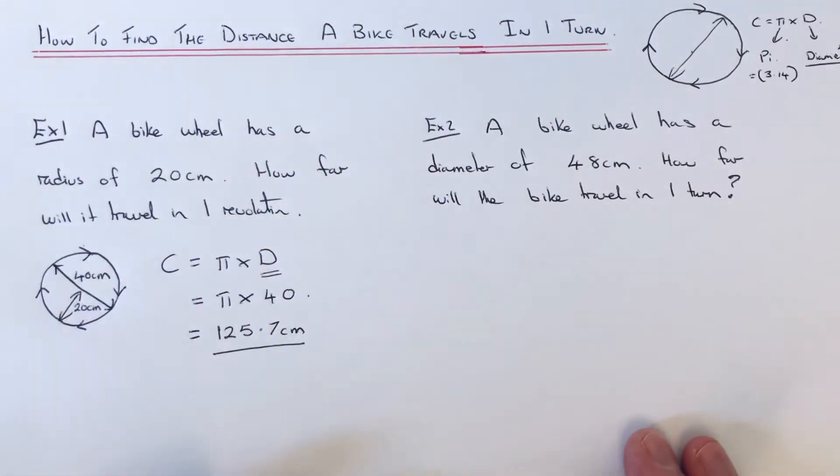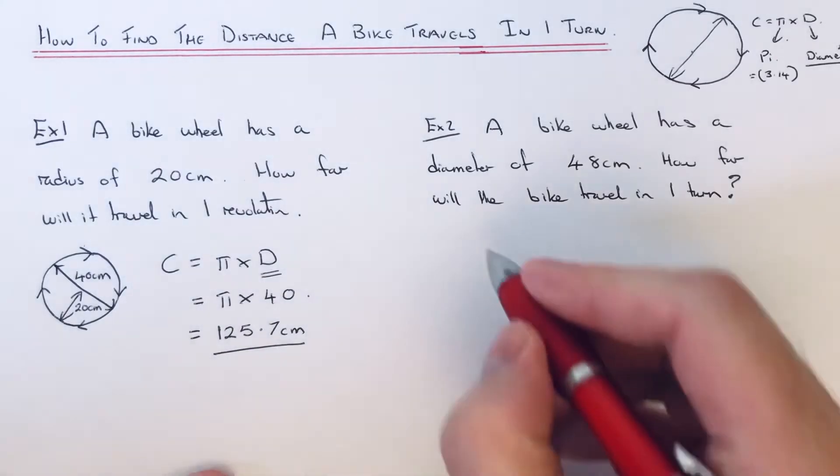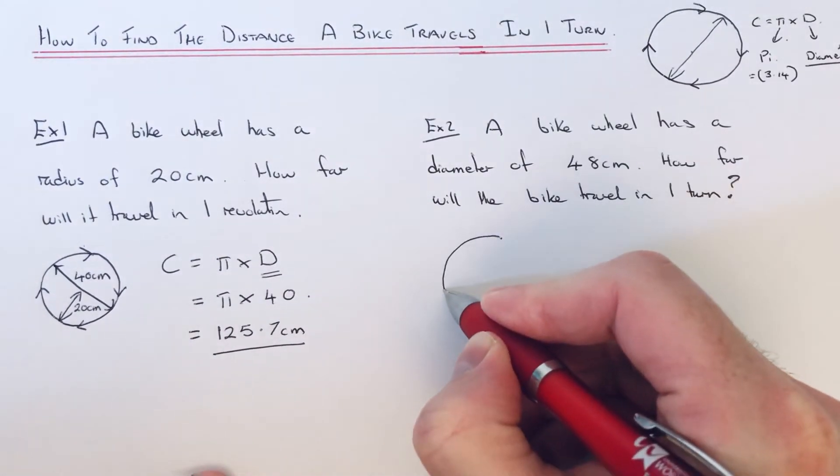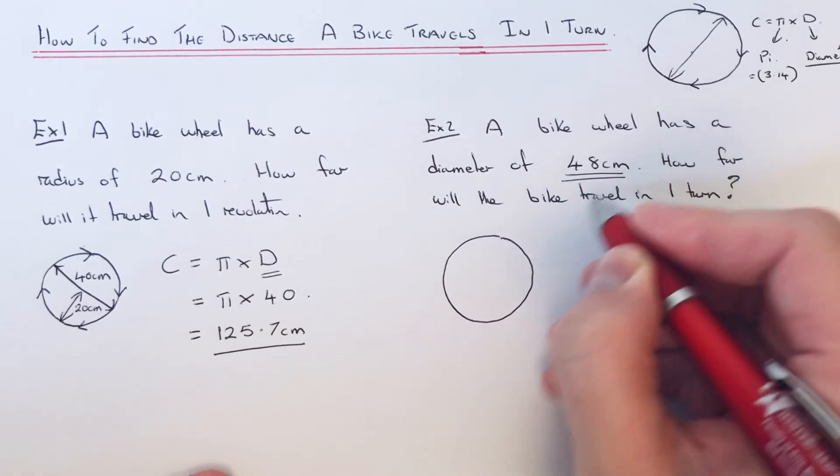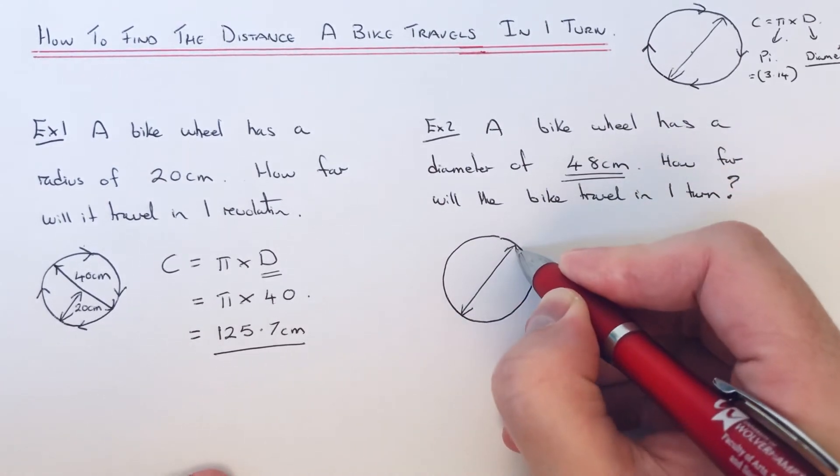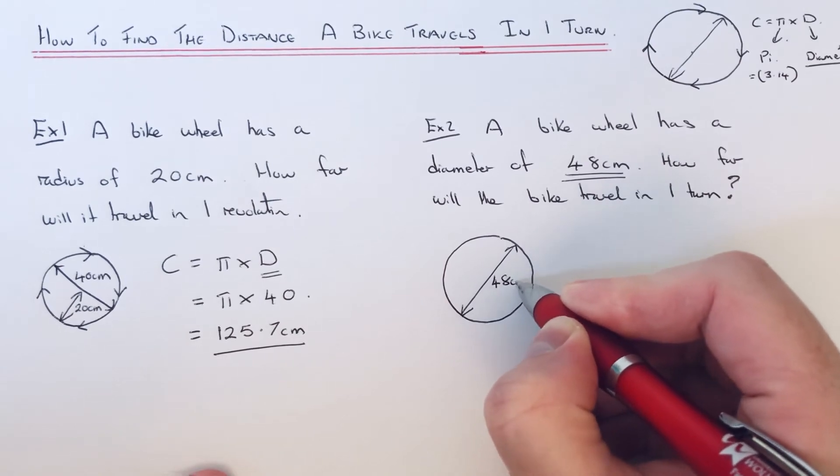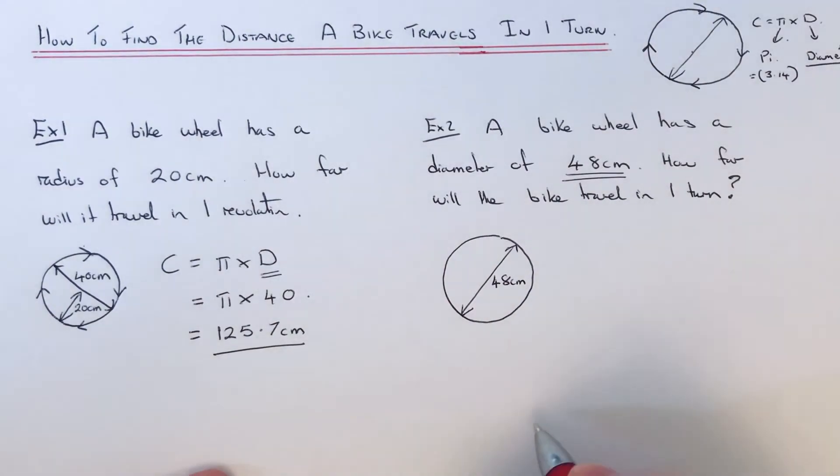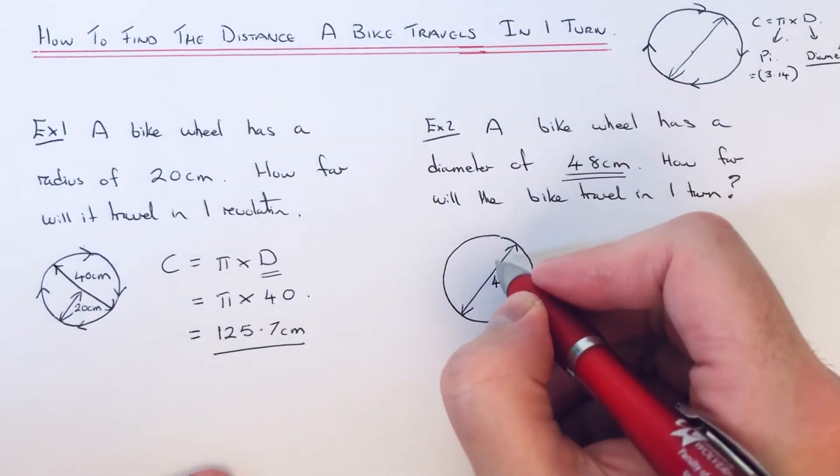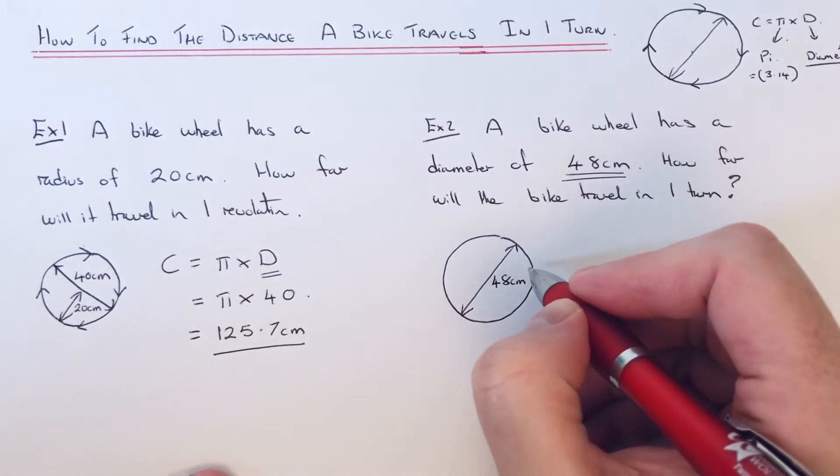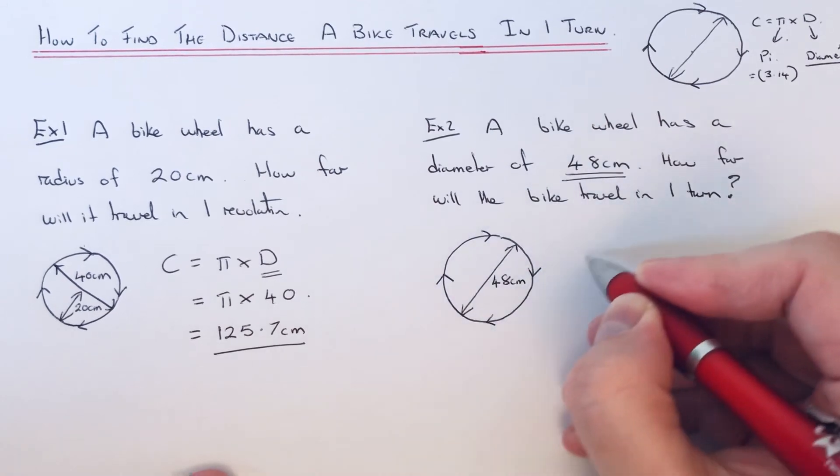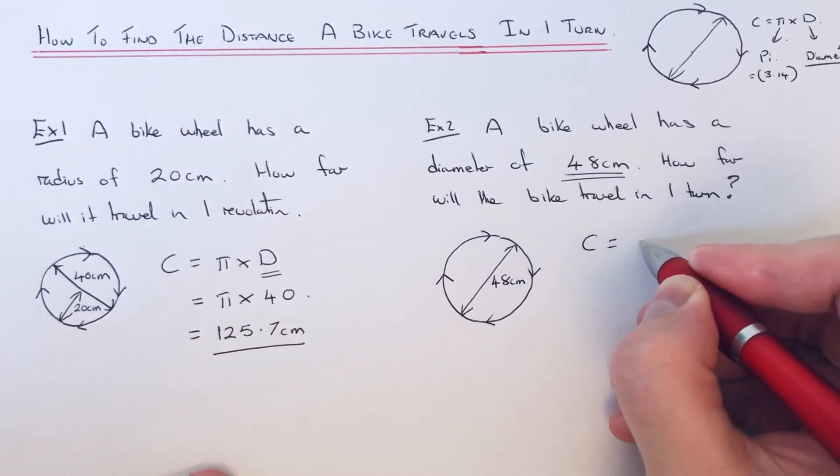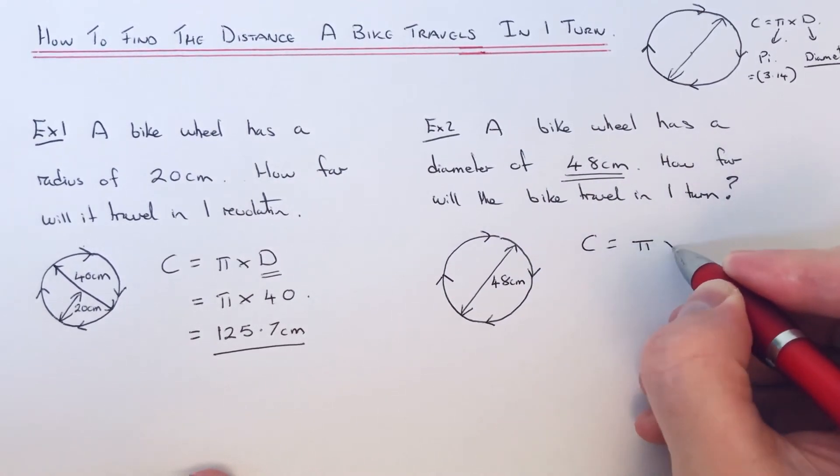A bike wheel has a diameter of 48 centimeters. How far will the bike travel in one turn? Let's sketch out the problem. We're given a diameter of 48, the distance across the center of the circle. The distance the bike will turn will be the same as working out the circumference of the circle. Our formula for circumference is pi times D.